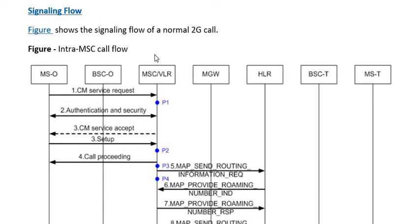We have a mobile station on the originating side and similarly a mobile station on the terminating side. The A party is served by the originating BSC and the corresponding MSC/VLR. Since it is an intra-MSC call, the same MSC serves the terminating party as well, and the media gateway used is also common for both originating and terminating parties.